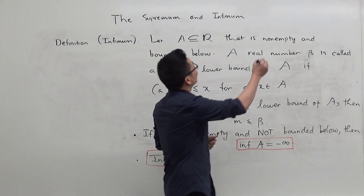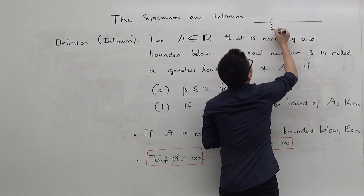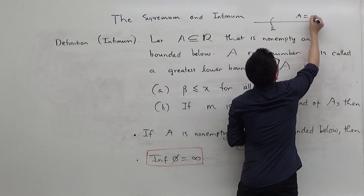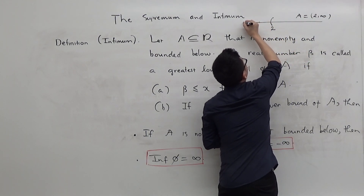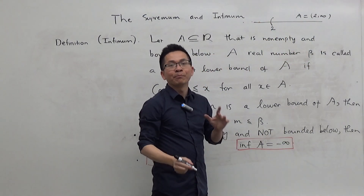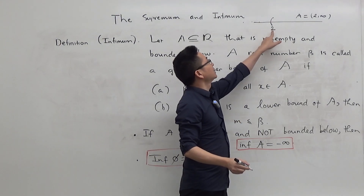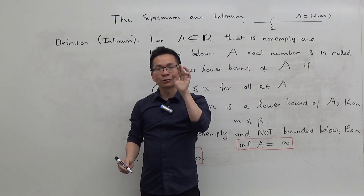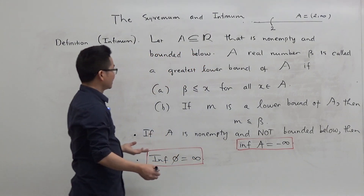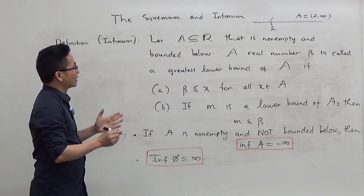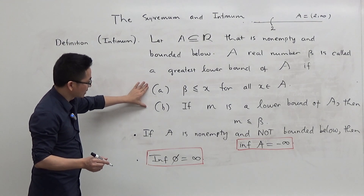For example, if A is the interval from 2 to infinity, A has many lower bounds, but 2 is the largest — or the greatest lower bound — of A. So the greatest lower bound of A satisfies these two properties.